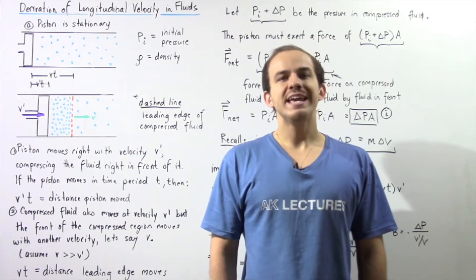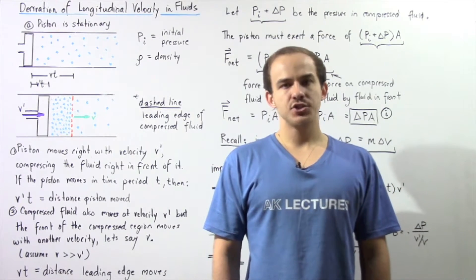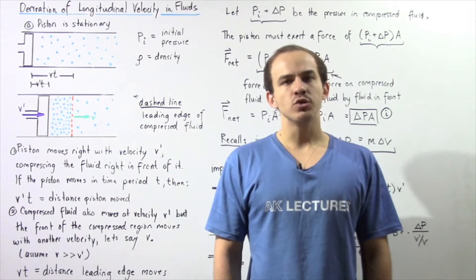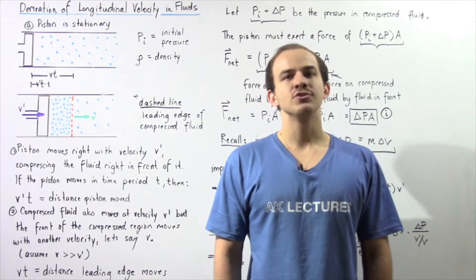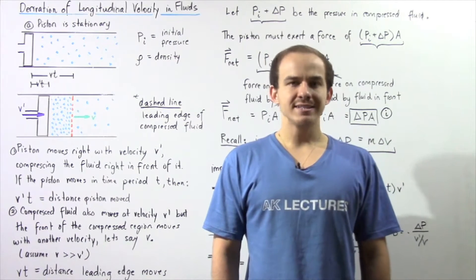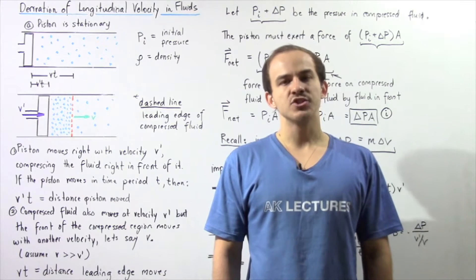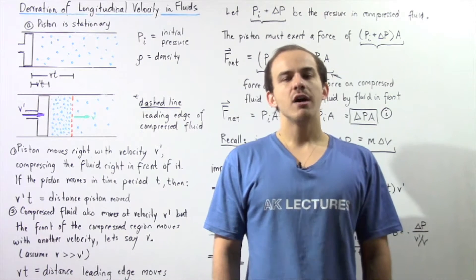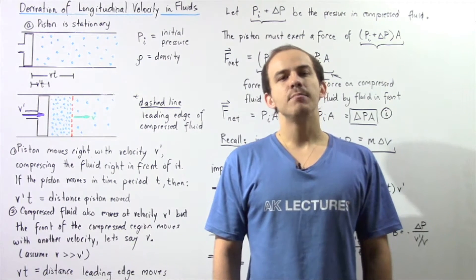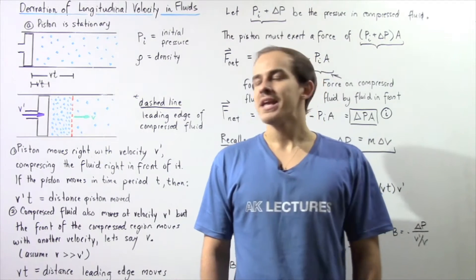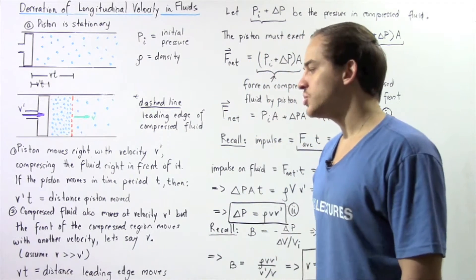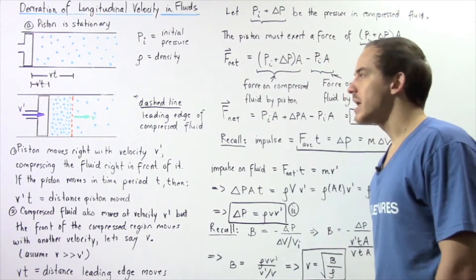In the previous lecture, we gave an equation that gives us the velocity of a longitudinal wave as it travels through a fluid. We said that the velocity is equal to the square root of the bulk modulus of that fluid divided by the density of that fluid. In this lecture, we're actually going to derive this equation.